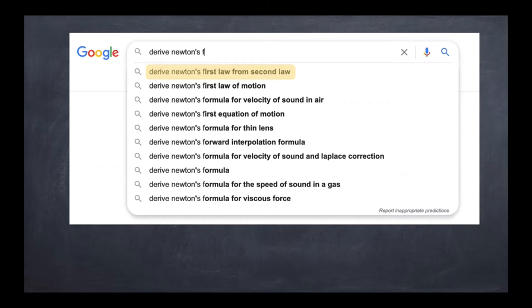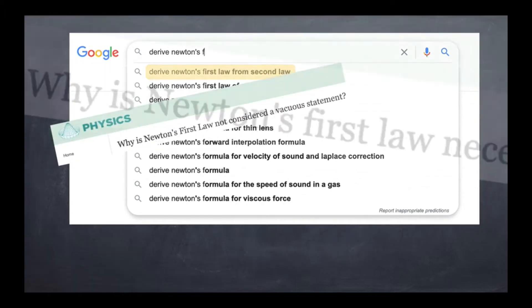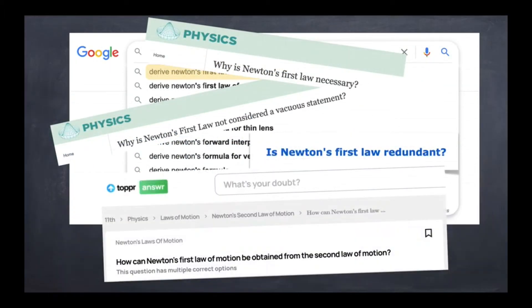And indeed, to illustrate this fact I've taken a couple of screenshots of the kind of links you get. So what you can see here is that a typical query is whether Newton's first law is necessary or whether it's redundant or whether it's vacuous even, or how it can be obtained from Newton's second law.